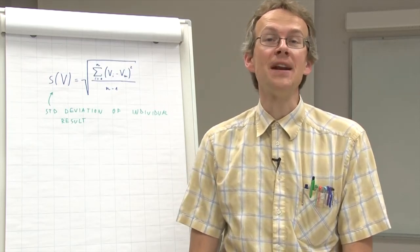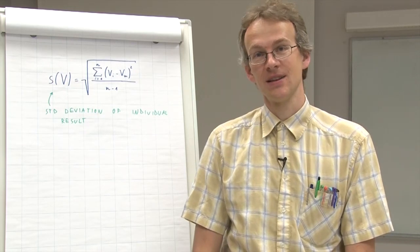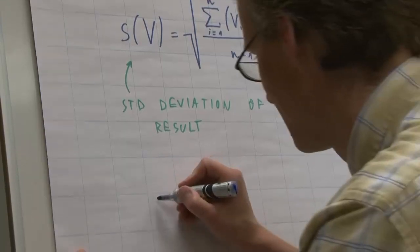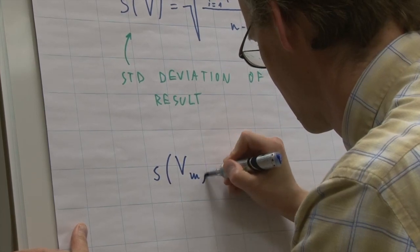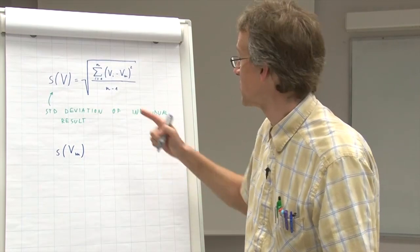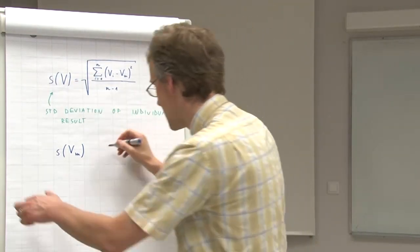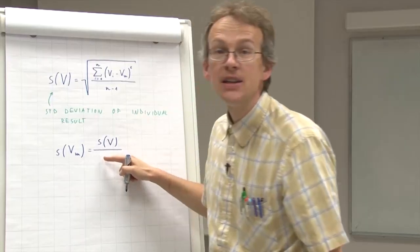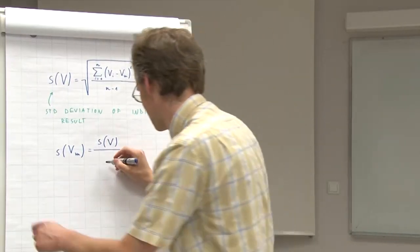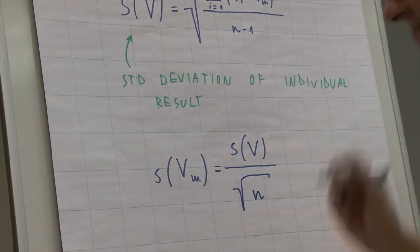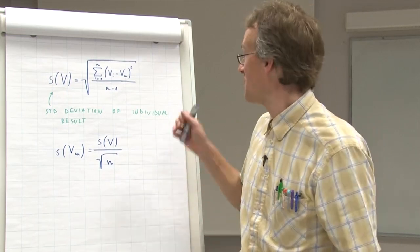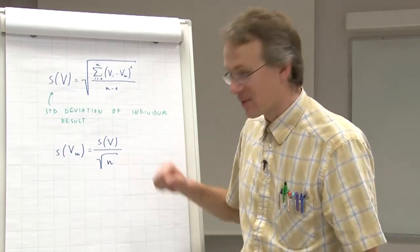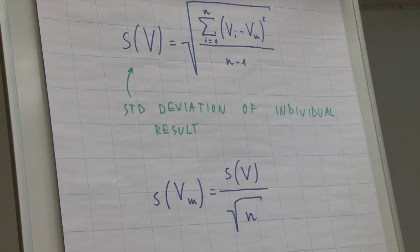Therefore, most of the time people use a very much simpler approach to find the standard deviation of the mean. And it turns out that the standard deviation of the mean can be found from the standard deviation of the individual result, simply by dividing by square root of n. Very easy. So we make just one series large enough, say 10 to 15 measurements. Find the standard deviation divided by the square root of n. And here we have the standard deviation of the mean.